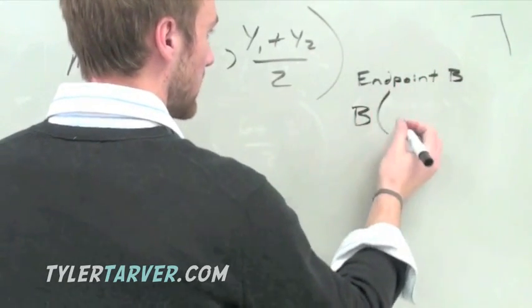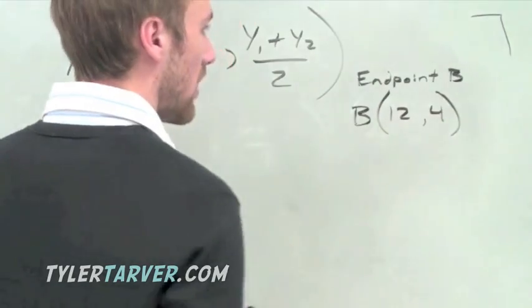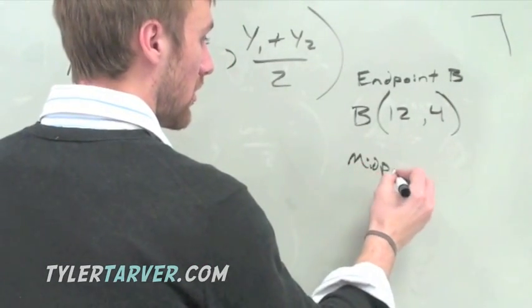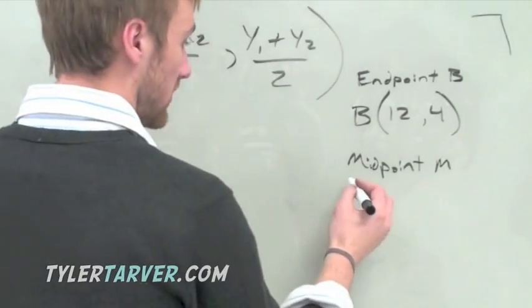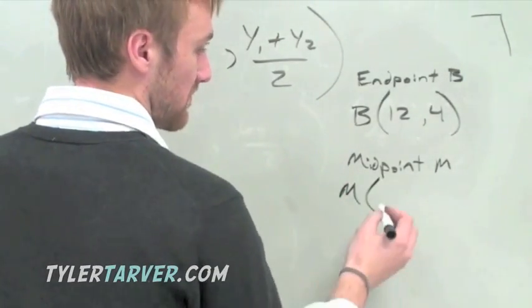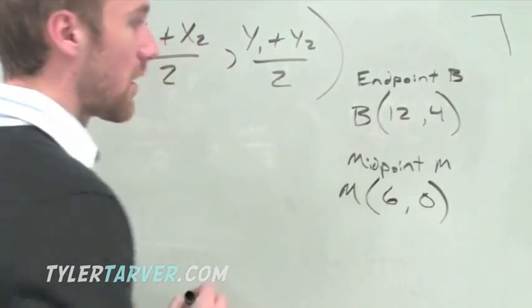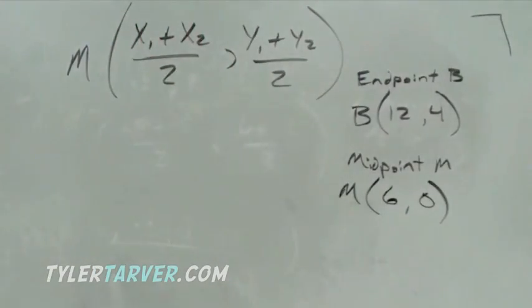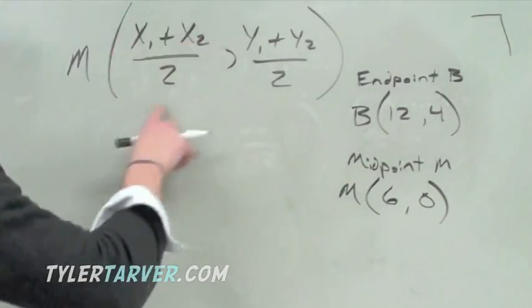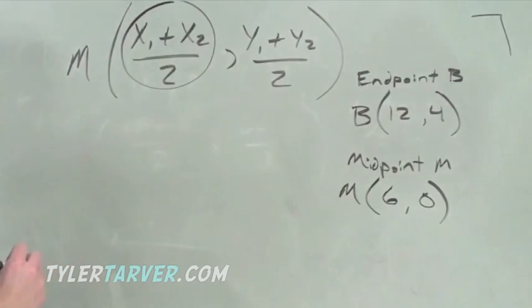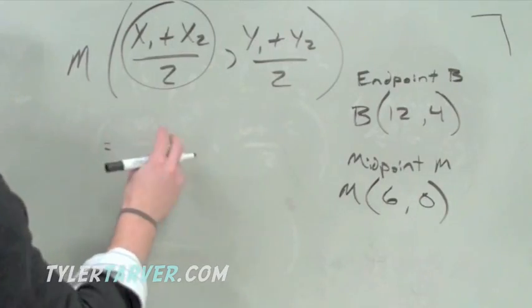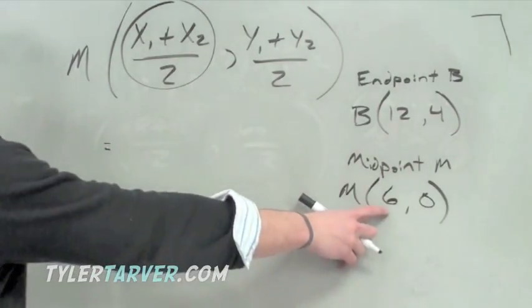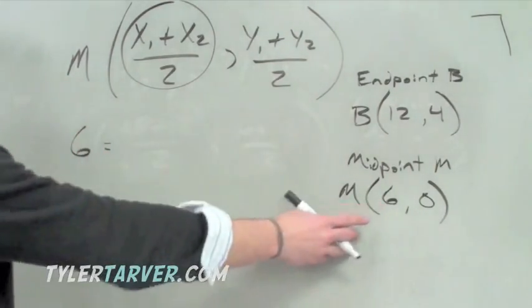Let's say we have an endpoint B located at 12, 4. And then we know the midpoint. They almost always say the midpoint is M, which stands for midpoint because they're silly little math people. M is at 6, 0. Now, there's two ways to do this. I'll show you the first way. We can use the midpoint formula. We would use just the x part, just this little guy right here. We know that this is going to equal out to 6, our midpoint.